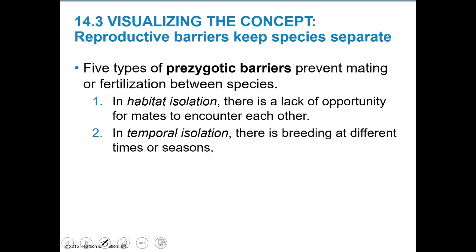There are five types of prezygotic barriers — things that prevent mating or fertilization between species before a zygote can ever be formed. First is habitat isolation: a lack of opportunity for mates to encounter each other. Like the saying, 'A bird may love a fish, but where would they live?' If a fish lives in the sea and a bird lives in the sky, those are two habitats that won't ever meet. It can be as simple as one species living in a tree and one living underground — they could be feet from each other but it just won't happen.